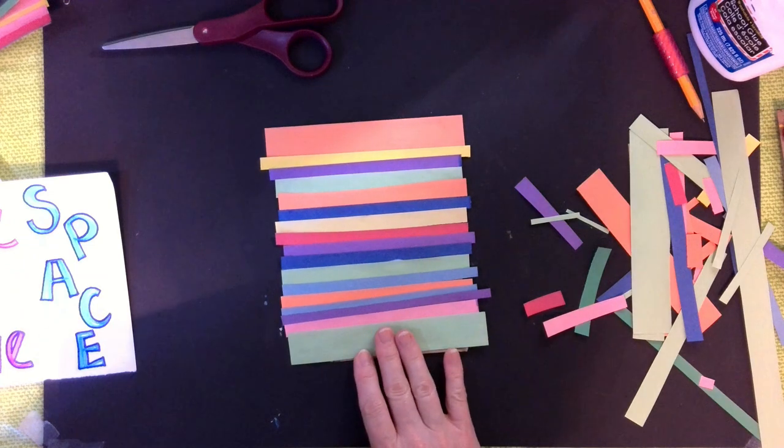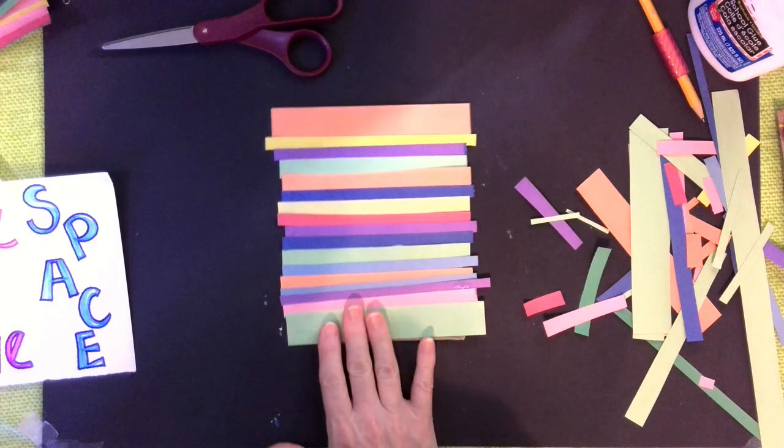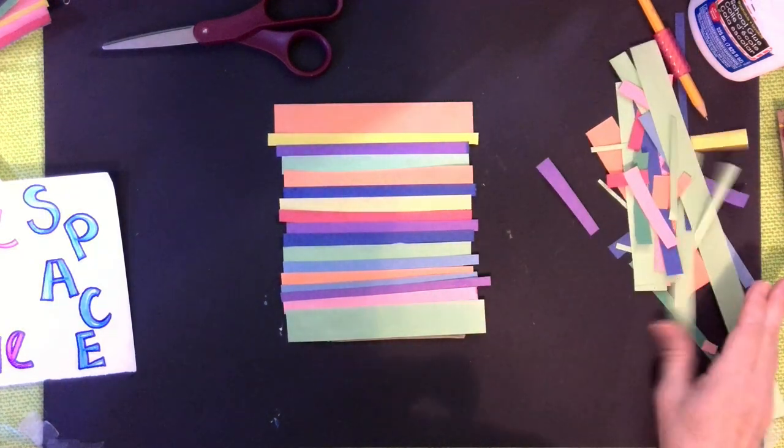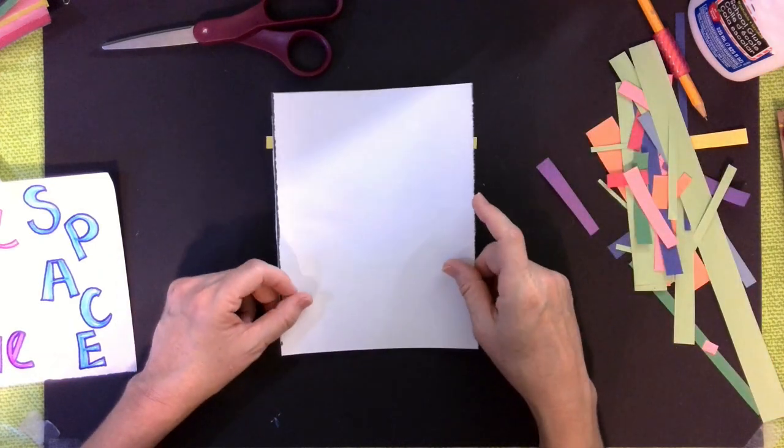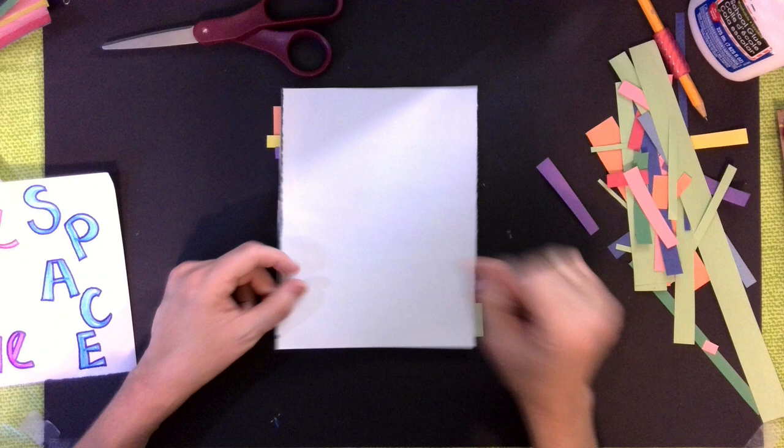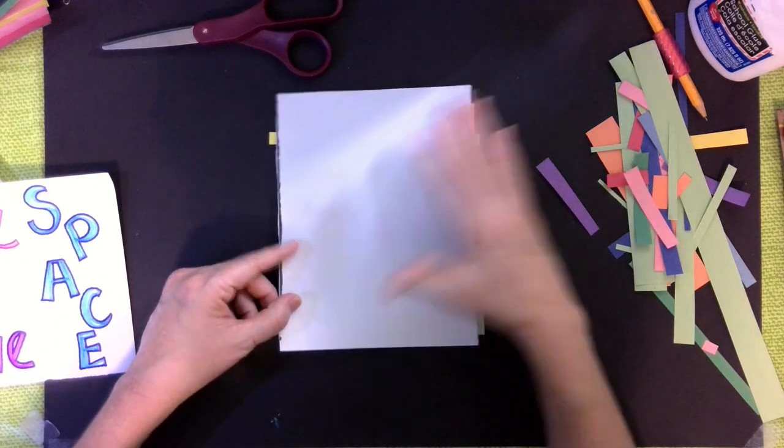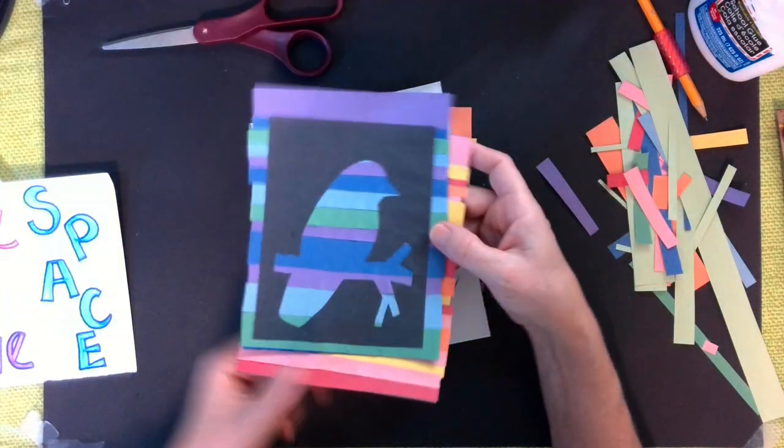Alright, the next thing you're going to need—and again, if I'm going too fast, go ahead and hit pause while you get caught up. Like I said, I had everything already cut and prepared ready to go; you may not have. You're going to need a color of construction paper, any of them, to fit.